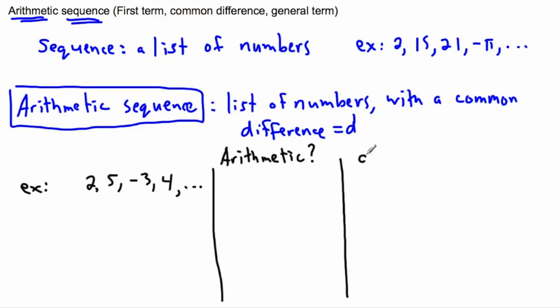So let's take a look at this one. So 2, 5, negative 3, and 4. Well the difference between 2 and 5 is 3. But the difference between 5 and negative 3 is not 3 again. So this is for sure not arithmetic. So because of that, it doesn't make any sense to find the value of d. So there isn't a common difference.